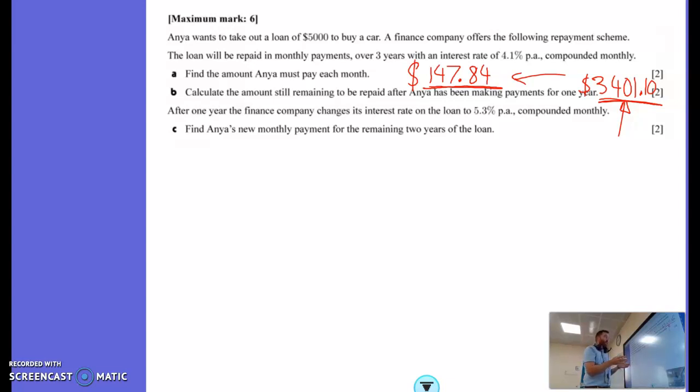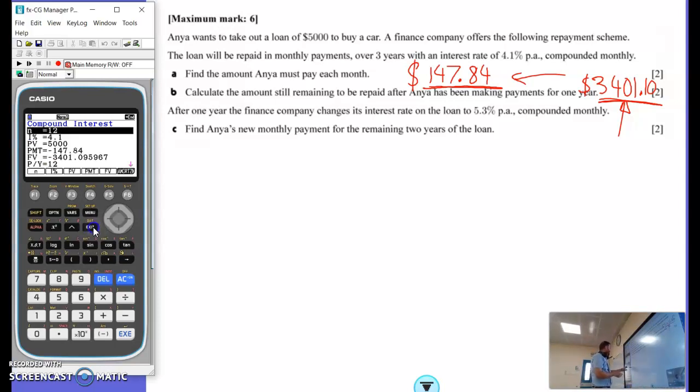The interest rate has changed. Now, what's her new payment? We're going to be finding payment. Let's have a look at what values we can put in here. Two years, so it's going to be 24 more compounding periods. Interest rate has changed up to 5.3%. The present value is no longer $5,000. We're doing after we paid off that first year. So, our new present value is that $3401.10. We want to find this payment. The future value, we'll put back to zero, because we want to get down to having paid it all off.